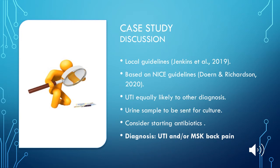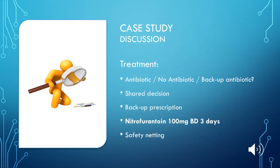These guidelines are based on a mixture of evidence including systematic reviews, randomised control trials, and expert opinion, and are therefore considered a robust guideline. It was decided that there were two likely diagnoses: an uncomplicated lower UTI and/or musculoskeletal back pain.